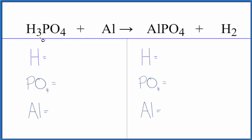In this video, we'll balance the equation for H3PO4 plus Al. This is phosphoric acid plus aluminum.